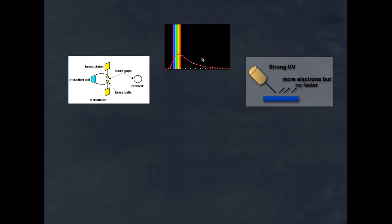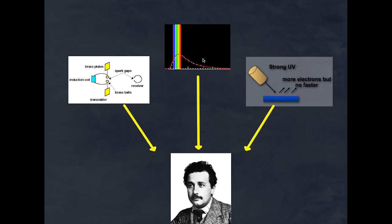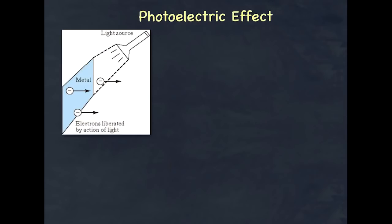In the early 1900s, Max Planck's, Lenard's, and Hertz's work was interpreted by this guy — a very young-looking Albert Einstein. Albert Einstein put it all together, and that's really what his genius is. He said: there's light shining on metal, and we know that electrons are liberated somehow by the shining of light.